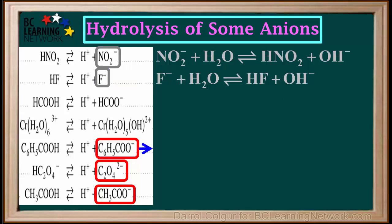Now we'll write an equation for the hydrolysis of the benzoate ion, C6H5COO-. We start by writing the C6H5COO-. Being a weak base, this also reacts with water and takes a proton from it, forming its conjugate acid, C6H5COOH, and a hydroxide ion.